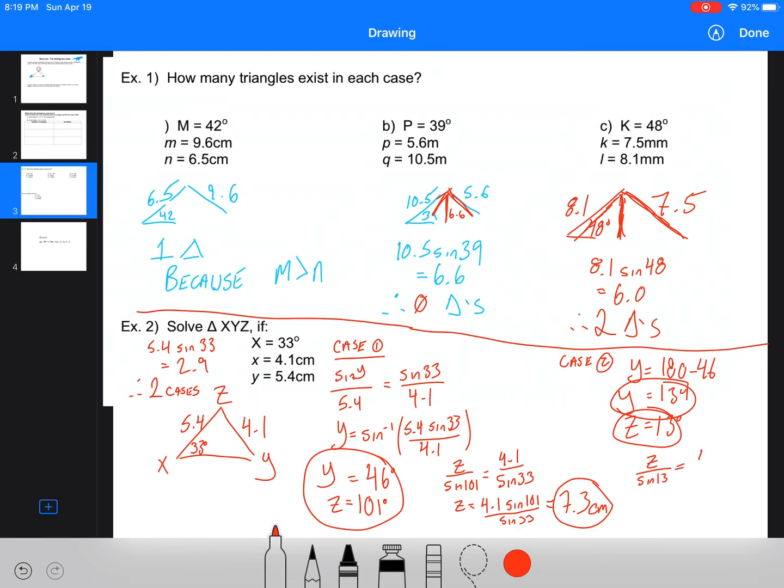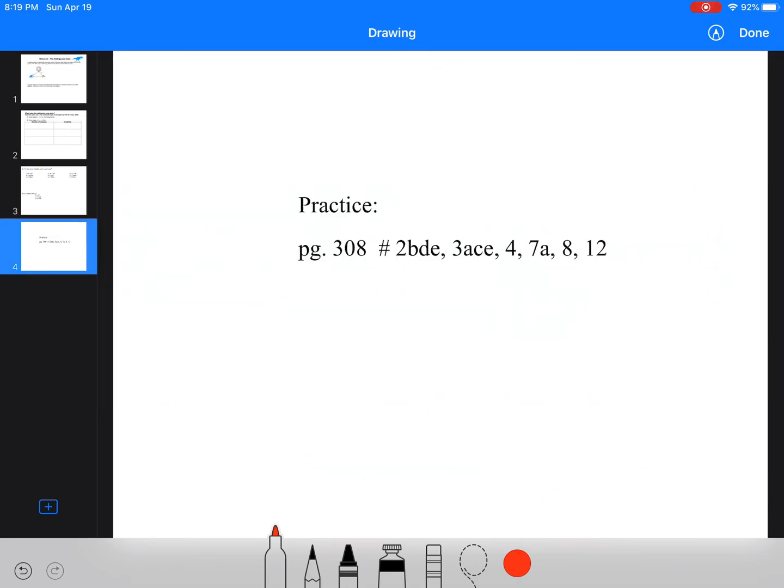And then we've got Z, Y, and then we're going to do the exact same thing here. We're going to have Z over sine 13 equals 4.1 over sine 33. Z equals 4.1 sine 13 over sine 33. And we get 1.7.